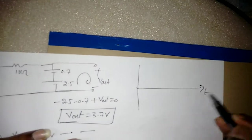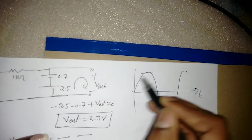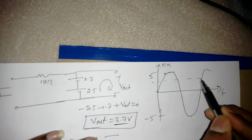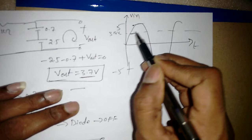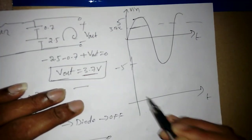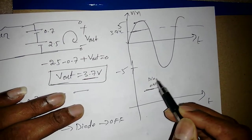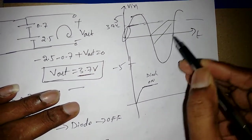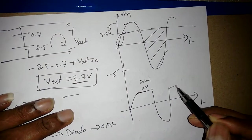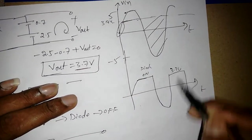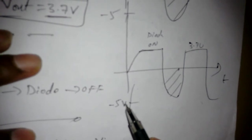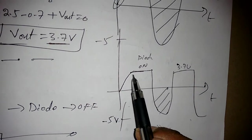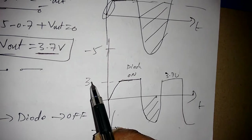Drawing the waveform: Vin varies from 5V to -5V. The reference clipping level is at 3.7V. Whenever Vin is greater than 3.2V we get only 3.7V at the output because the diode is ON. For values less than 3.2V, whatever input we give, we get that same output. For the negative half cycle we get the full -5V. That is why the clipping circuit is also called a limiter — it limits the voltage for the positive half cycle.